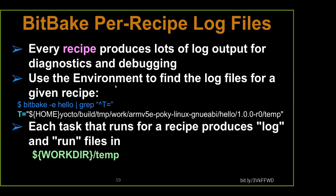We're going to use the environment variable to find the log files. Normally you'll see a red output in the console, and in the middle of that red output will be a very long path directly into the log file where the error occurred. You can also find the actual path by looking at your T directory. You have to be careful: we're talking about the build temp directory versus the TEMP directory where your logs exist. These are done on an individual build basis by architecture.